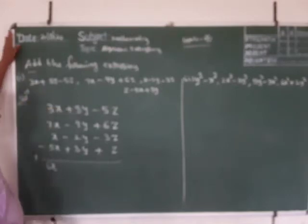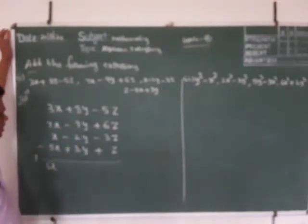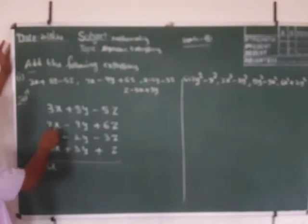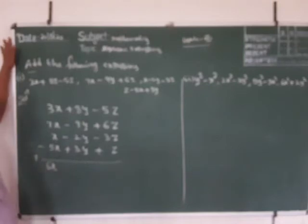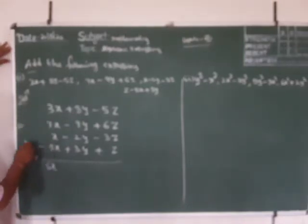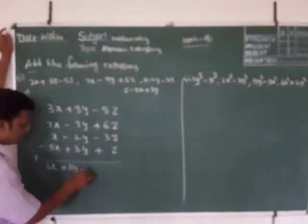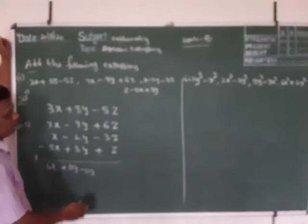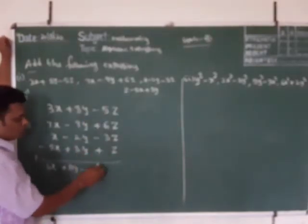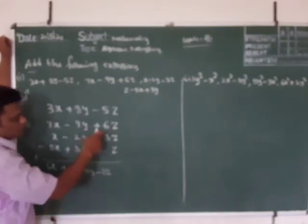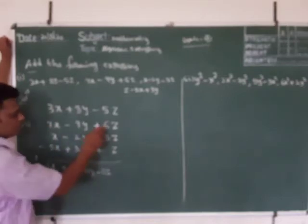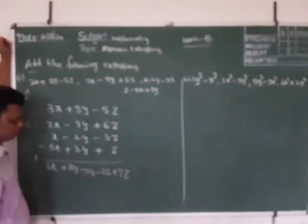Now for y: 8y plus 3y is 11y, then minus 9y minus 2y. So 8 plus 3 is 11y, and 11y minus 9y minus 2y gives the y result. For z: minus 5z minus 3z is minus 8z, plus 6z plus z is 7z, so minus 8z plus 7z.